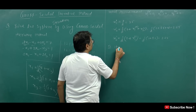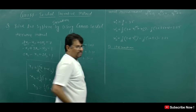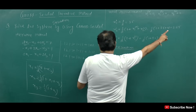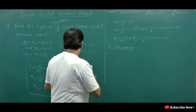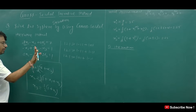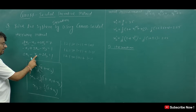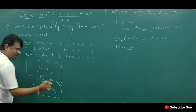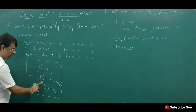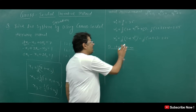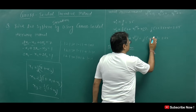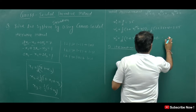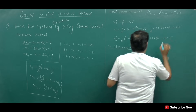Now we will talk about the second iteration. The values from the first approximation are: x1 = 3.5, x2 = 2.25, and x3 = 1.625. In the second iteration, x1 = (7 + x2) / 2 = (7 + 2.25) / 2 = 9.25 / 2 = 4.625.